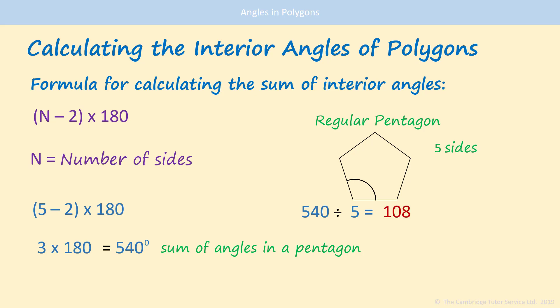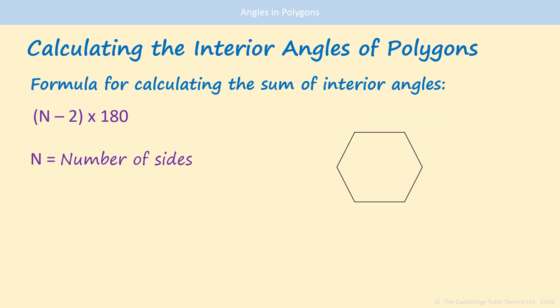540 divided by 5 is 108. So each angle will be 108 degrees. Here's another one for you to try. This time you have a six-sided shape, a hexagon. It is a regular hexagon. See if you can work out the sum of the interior angles and then just that one angle indicated there.